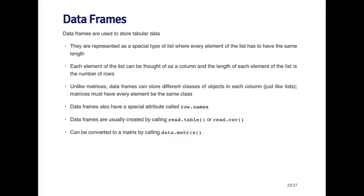The data frame is a key data type used in R for storing tabular data. Data frames are represented as a special type of list where every element of that list has the same length — you can think of each column as an element of the list, and every column must have the same length. However, each column doesn't have to be the same type: the first column could be numbers, the second a factor, the third integers, and the fourth logical. Unlike matrices, which must store the same type in every element, data frames can store objects of different classes.